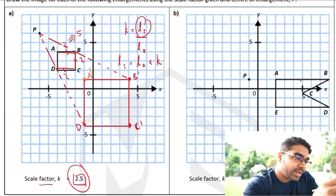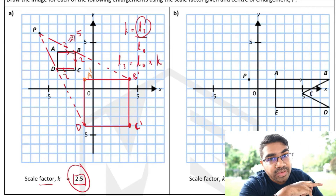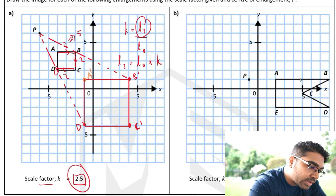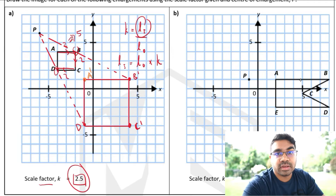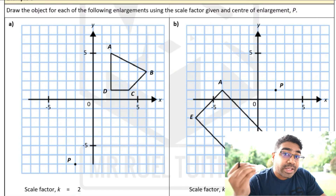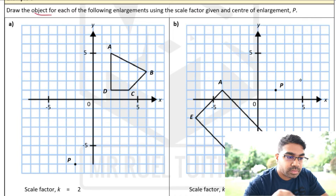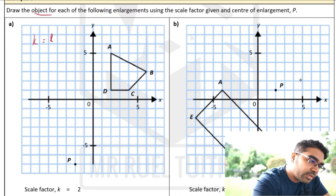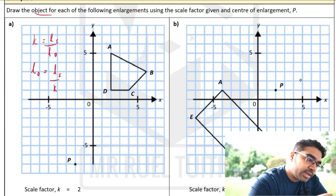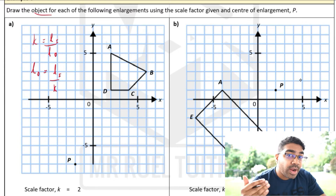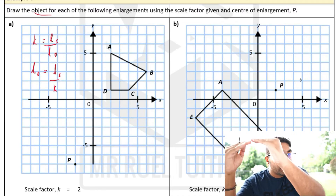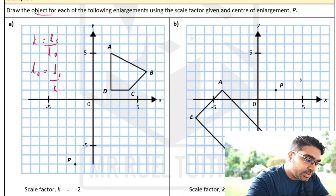You can always check by drawing a line from the center of enlargement to the image and seeing whether it passes through the corresponding vertex of the object. Now, what if we needed to find the object instead of the image? We use the same method, but this time the length of the object equals the length of the image divided by K, so instead of multiplying by K we divide by K to go from image back to the object.